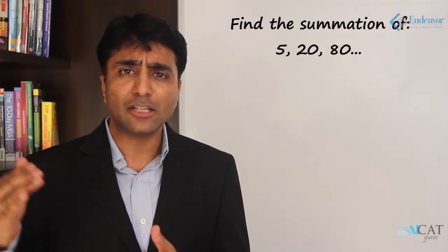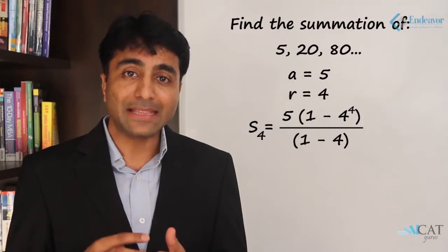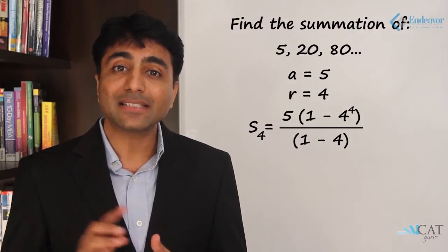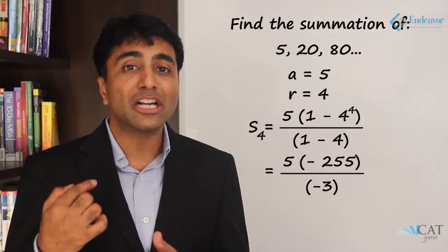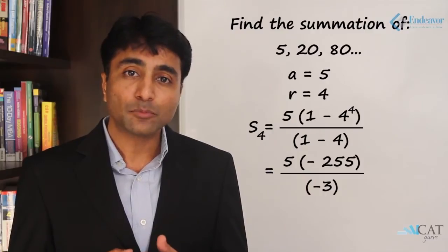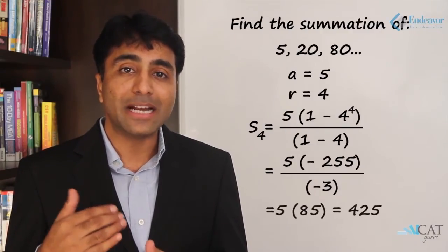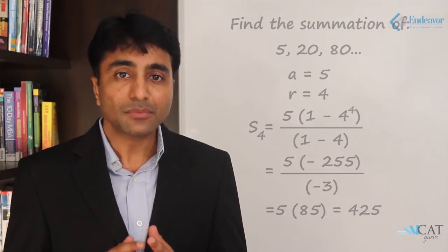To find the sum of the first 4 terms of the series 5, 20, 80, …: a = 5, r = 4. Applying the formula: 5 × (1 − 4⁴) / (1 − 4) = 5 × (1 − 256) / (−3) = 5 × (−255) / (−3) = 5 × 85 = 425. The negative signs cancel, so the summation of the first 4 terms is 425.